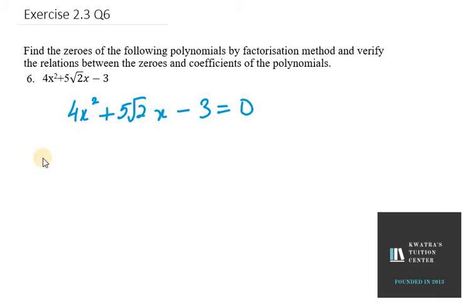Hello everyone, let's start with question number 6. In this case we are given with 4x squared plus 5 under root 2x minus 3 equals 0. We need to factorize the term by factorization method, or middle term splitting. So we have 4x squared plus 5 under root 2x minus 3 equals 0.